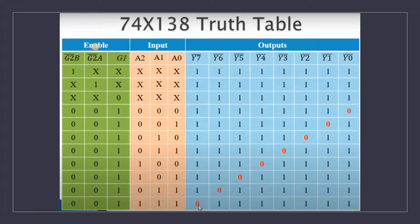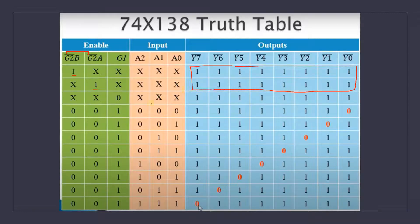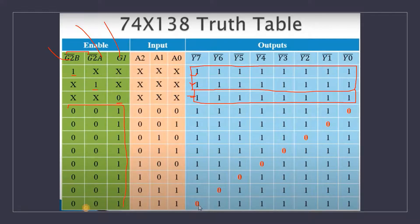Now the IC truth table adds enable pins to what we already know. If G2A or G2B is connected to one, the output will be zero. If G1 is not connected to one (i.e., zero), the IC is disabled and output is zero. For the IC to work: G2A = 0, G2B = 0, and G1 = 1. In those enabled cases, the outputs are inverted — when the decimal value is 0, D0 line gets a 0 in the truth table (displayed as 1 because they're inverted). Y1, Y2, Y3, and so on get selected accordingly.